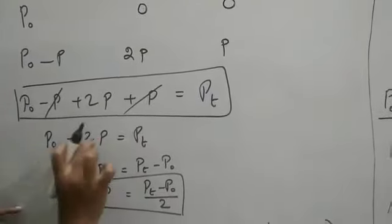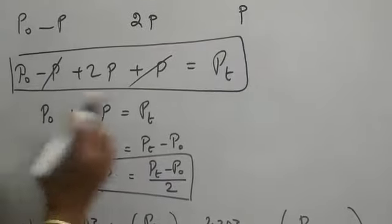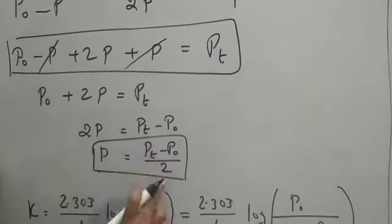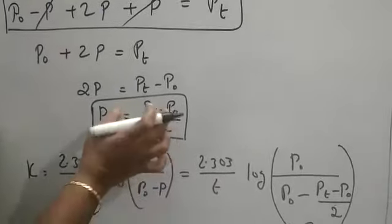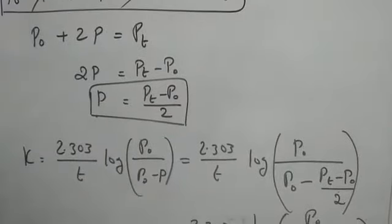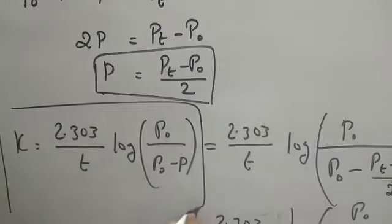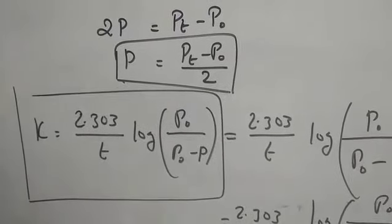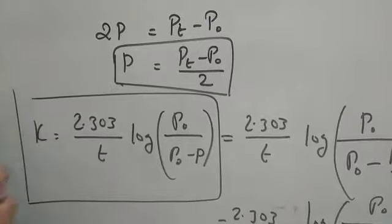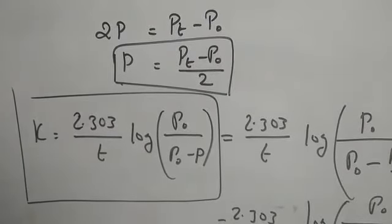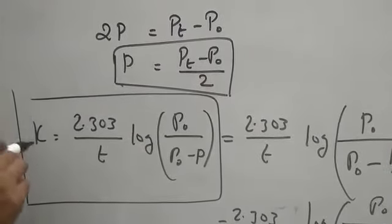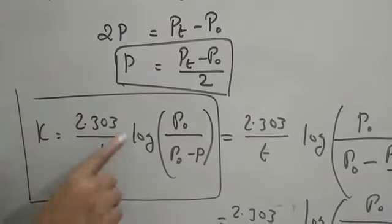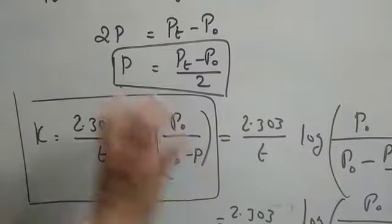From that, we find P. So 2P = Pt − P₀, and bringing the 2 over gives P = (Pt − P₀)/2. Now, since the reaction is first order kinetics, the formula for the rate constant is K = 2.303/T × log(initial/remaining). Initial is P₀, and since P₀ is initial and P is converted, initial minus converted is the remaining amount.